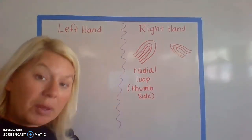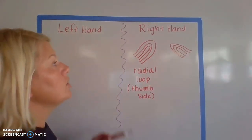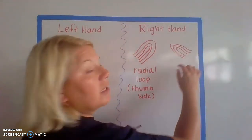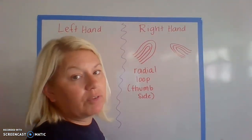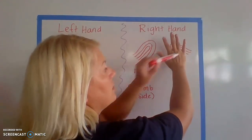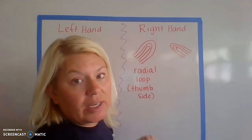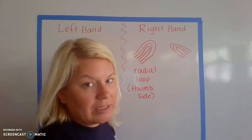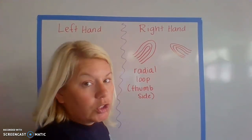So just think it's the thumb side of your hand versus this loop right here, which is entering and exiting from the right side of the fingerprint. That is actually the side of my pinky, which is the side where my ulna bone is. So therefore, we call it an ulnar loop.